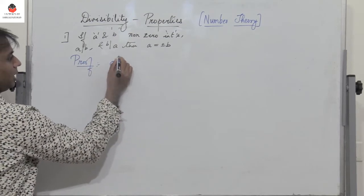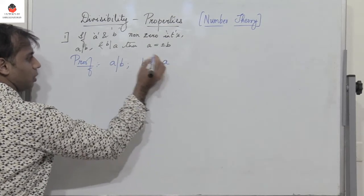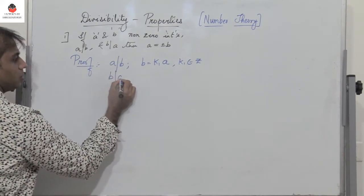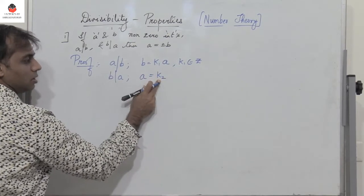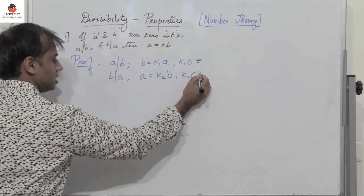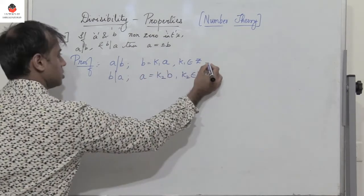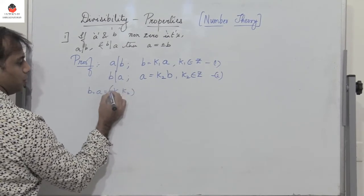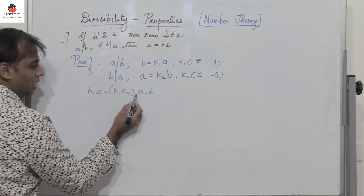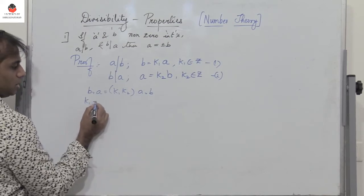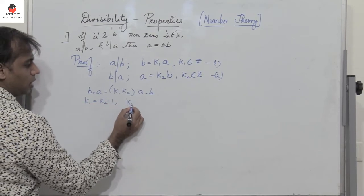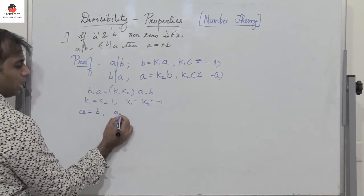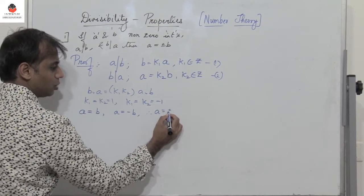Since A divides B, we can write B equal to K1 into A, where K1 belongs to the set of integers — call this equation 1. Similarly, since B divides A, we write A equal to K2 into B, where K2 belongs to Z — call this equation 2. Now multiply equations 1 and 2: B into A equals K1 into K2 into A into B. This holds when K1 equals K2 equals 1, or K1 equals K2 equals minus 1, giving us A equals B or A equals minus B. Therefore A is equal to plus or minus B.